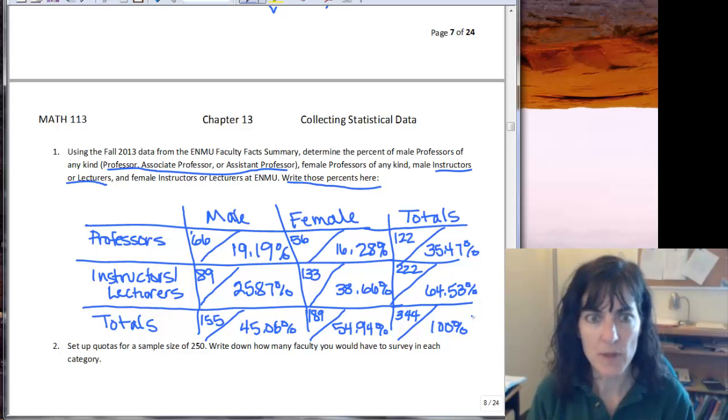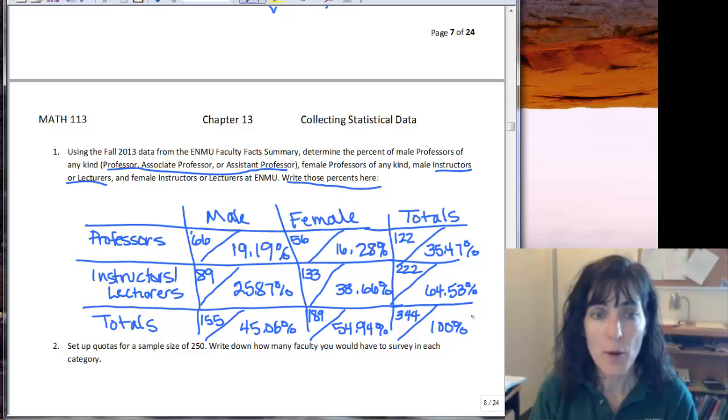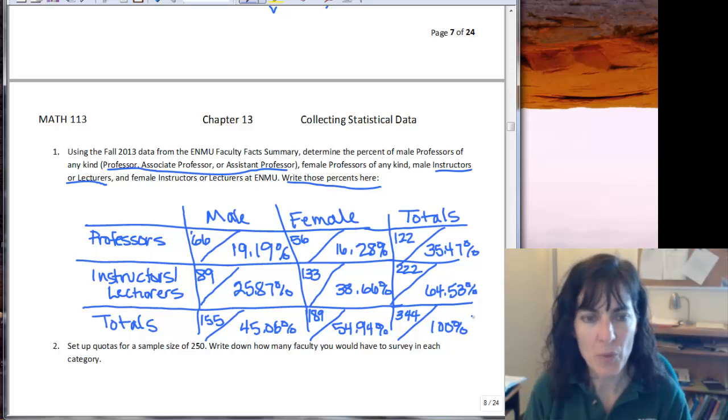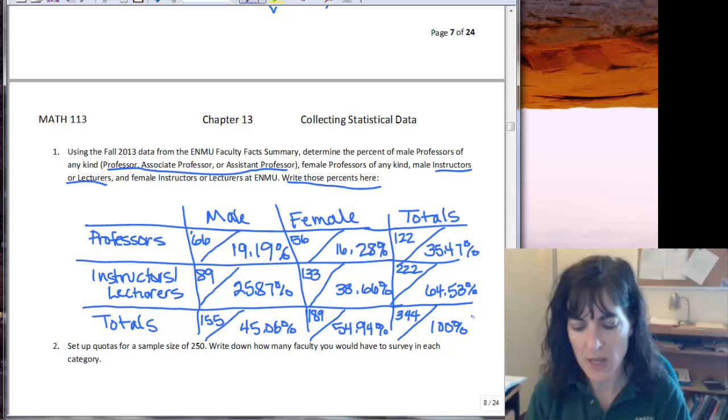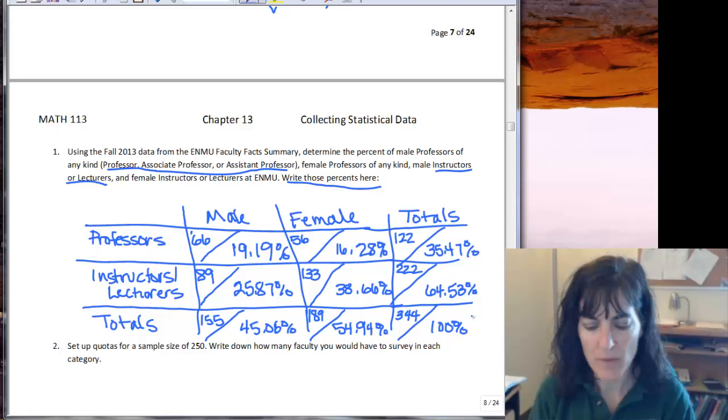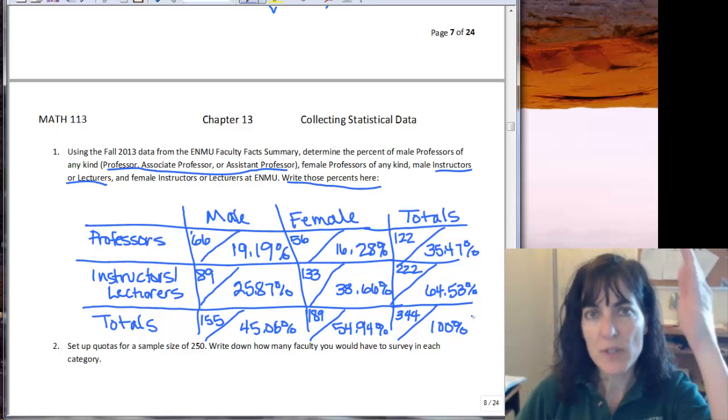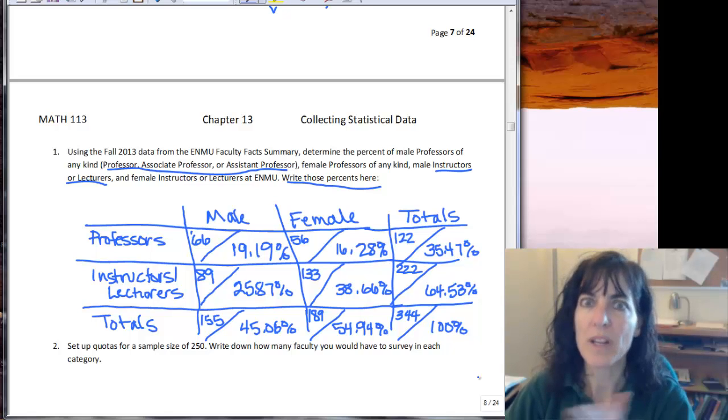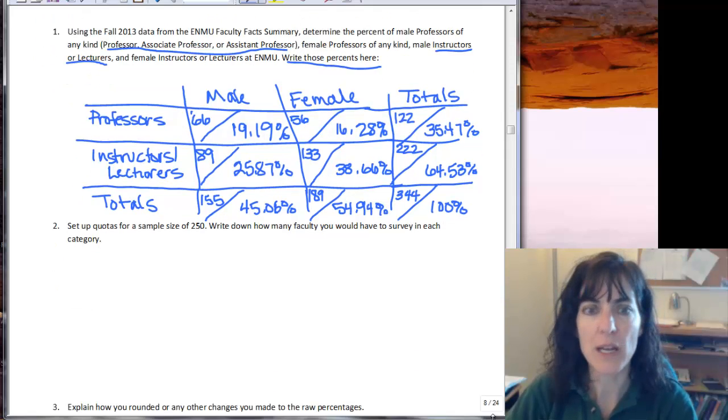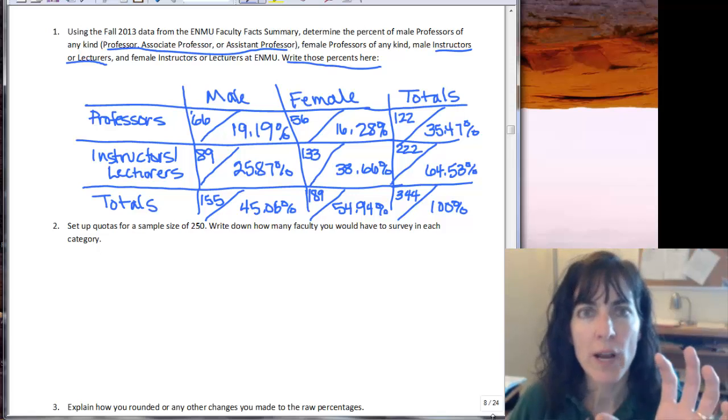So now what we want to do is double check some figures. So I want to take that 19.19 plus 16.28 and I get 35.47, that's perfect because that's what I have on the row for the top row. And then 25.87 plus 38.66 equals 64.53, so that one works. And then 45.06 plus 54.94 equals 100, and then 35.47 plus 64.53 equals 100 as well. So I've just double checked by adding down and adding across for all my rows and columns so that I can make sure that everything totals what it should in the table. And that way I can make sure I didn't make any errors. So now I have a good idea of what the percents are for Eastern's population.